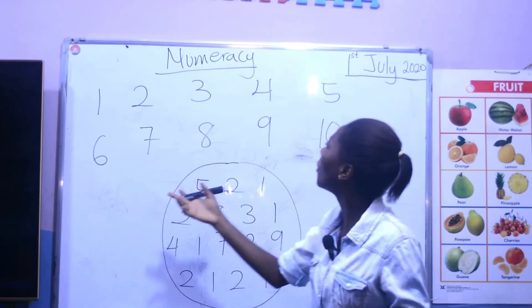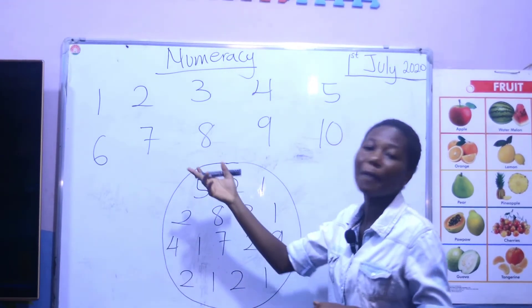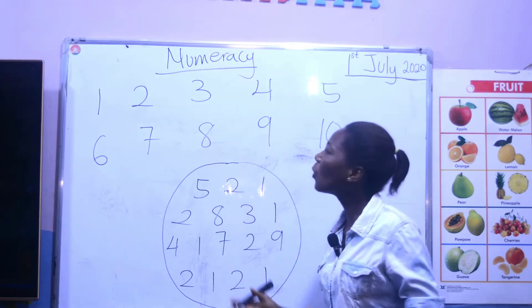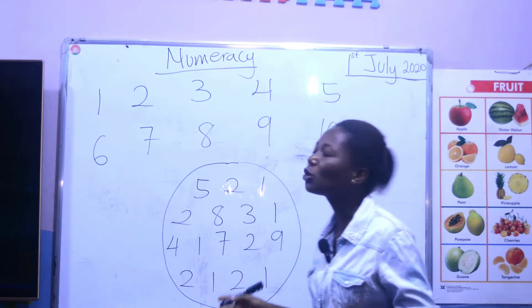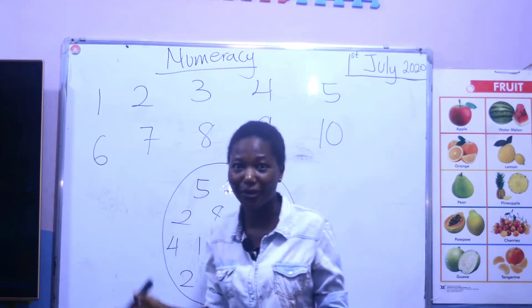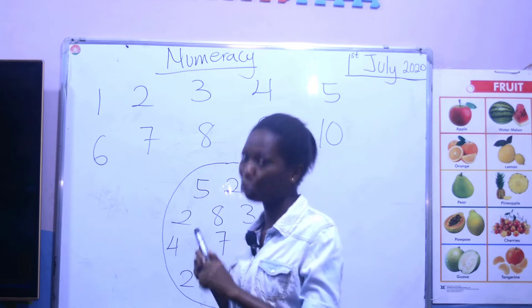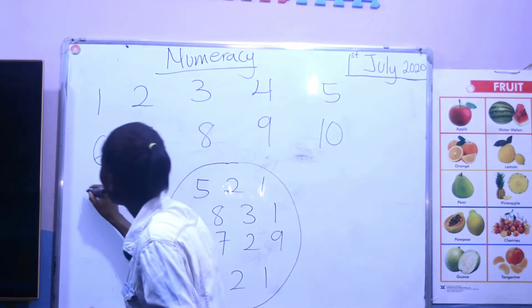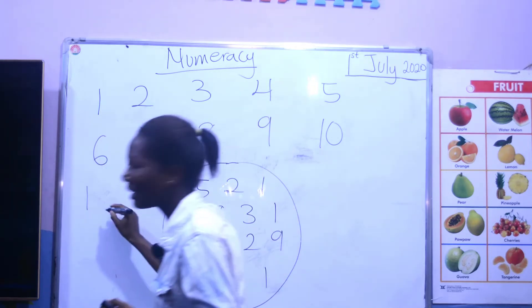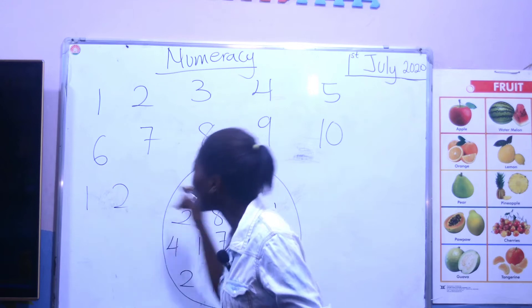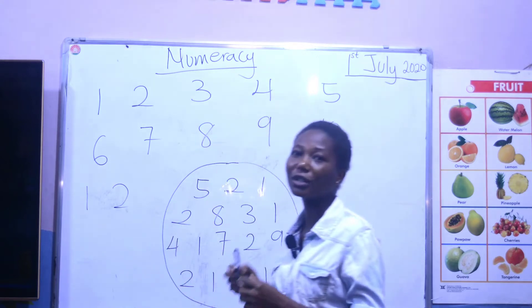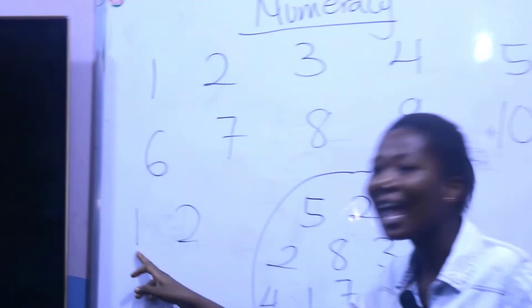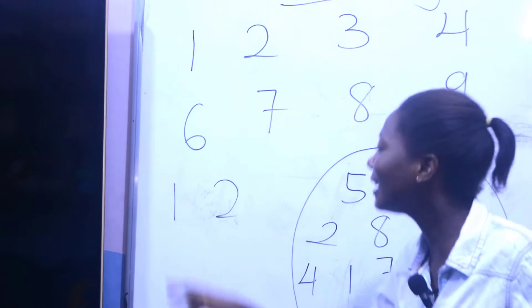Now we know we've counted numbers from one to ten. So we are going to identify one and two. Let me hear you saying one and two. Very good. We have one and two — again, one and two.